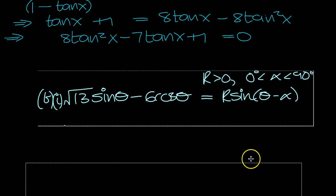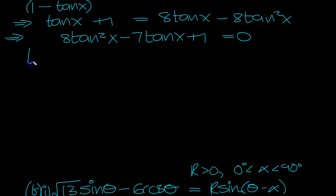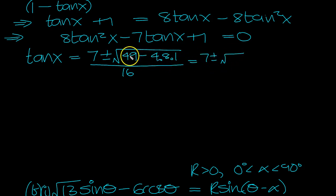I'll work out what tan X is. So tan X then, minus B plus or minus the square root of B squared 49 minus 4 times A, 8, times C is 1, 49 minus that lot over 2A is 16, which is 7 plus or minus the square root of 49 minus 17 over 16.